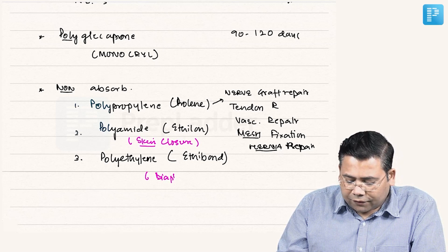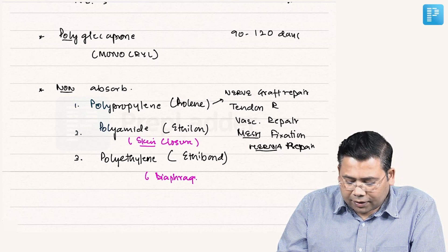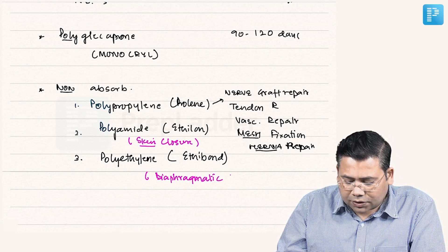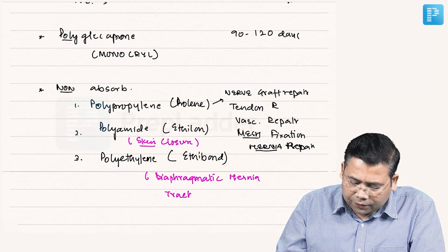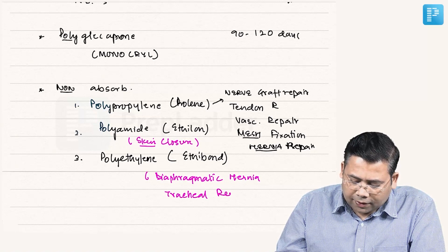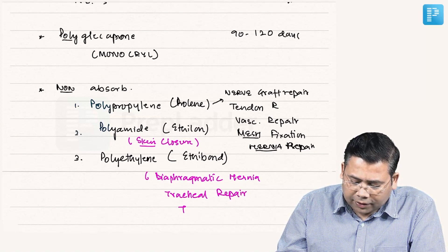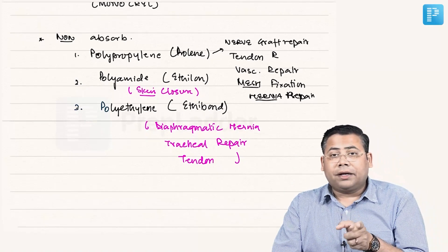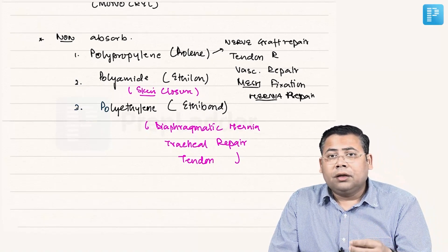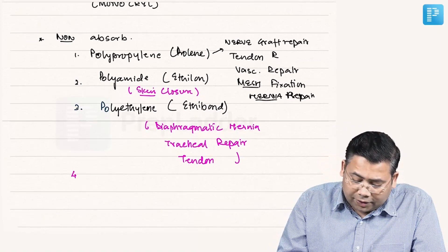Polyethylene, we use it for diaphragmatic hernia repair. This is very good for diaphragmatic hernia repair, tracheal repair, then tendon repair. It's a very costly suture. Remember, it's a braided gray colored suture. Many of you think that it's a monofilament. So it's a braided gray color.